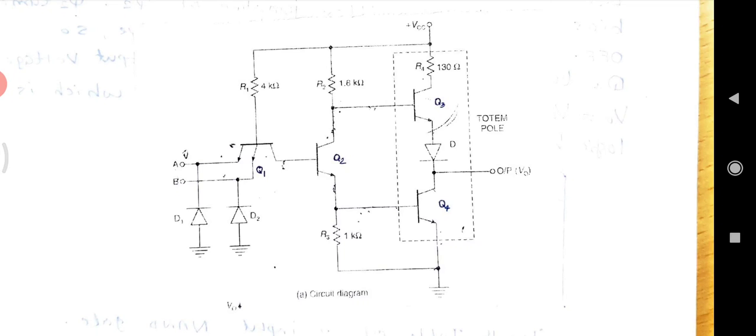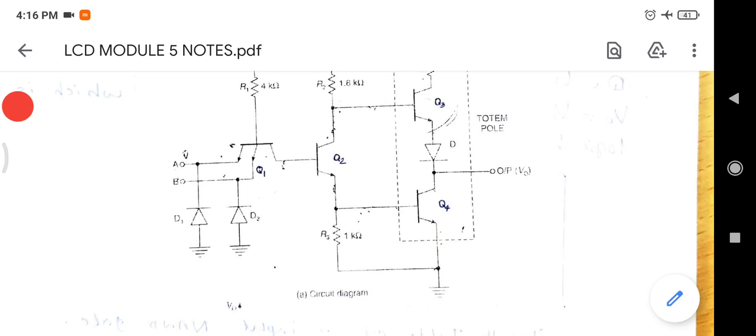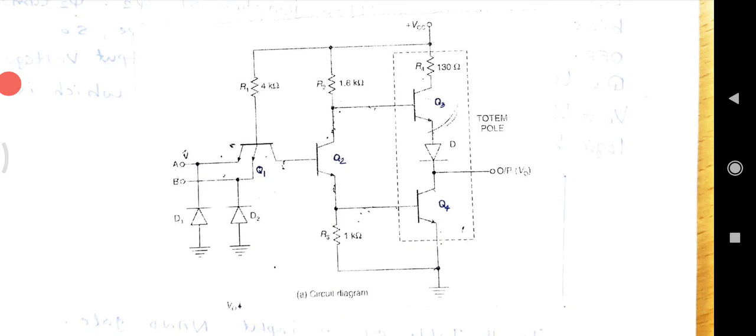The diode D ensures this. If Q4 is on, its base is at 0.7V with respect to ground.